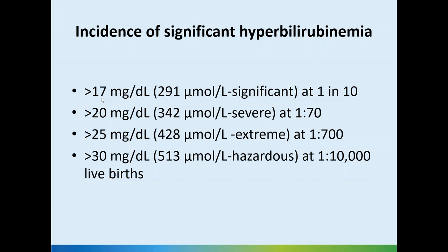More than 17 mg/dL (291 micromoles — conversion: milligrams times 17.5) occurs in 1 in 10 babies. More than 20 mg/dL, previously the cutoff for exchange transfusion in term babies, would have affected 1 in 70. Nowadays, following AAP 2004 recommendations, we rarely do exchange at 20 mg unless it's hemolytic jaundice or a premature baby. More than 25 mg/dL occurs in 1 in 700, and more than 30 mg/dL is very uncommon at 1 in 10,000.